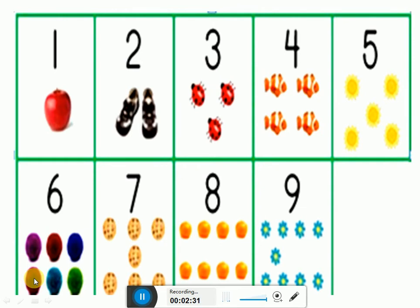Here are 6 balls. And here is number 7. And here are 7 biscuits. Let's count 7 biscuits. 1, 2, 3, 4, 5, 6, 7.